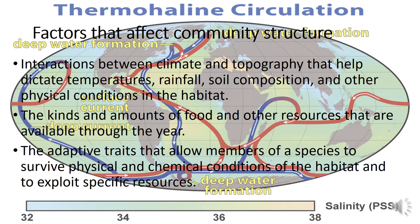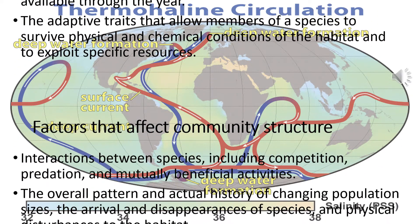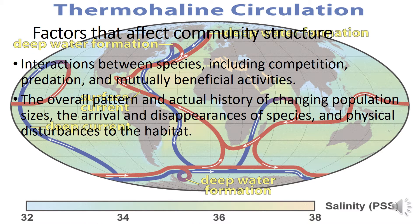There are several factors that affect the community structure. These are interactions between climate and topography that help dictate temperatures, rainfall, soil composition, and other physical conditions in the habitat. Second is the kinds and amount of food and other resources that are available through the year. Next is the adaptive traits that allow members of a species to survive physical and chemical conditions of the habitat and to exploit specific resources. Other factors are interactions between species, including competition, predation, and mutually beneficial activities, and the overall pattern and actual history of changing population sizes, the arrival and disappearances of species, and physical disturbances to the habitat.